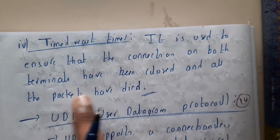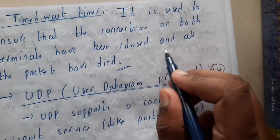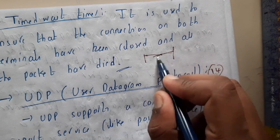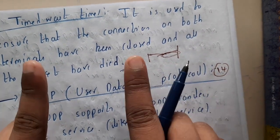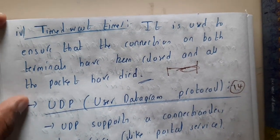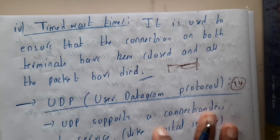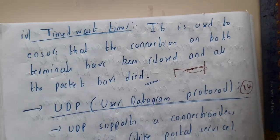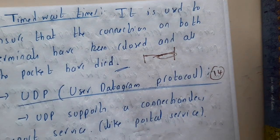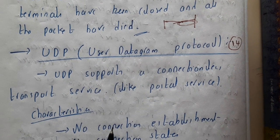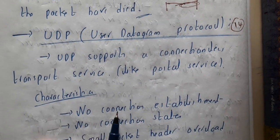The time wait timer ensures that the connection on both terminals has been closed and all packets have been delivered. The main issue is when one side decides to close while the other is still sending data, causing data loss. This timer waits for confirmation from both sides before closing. I hope everyone got a basic idea about TCP timer management. In the next lecture, we will be introducing UDP and going through the UDP header.